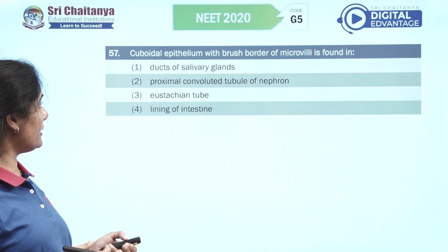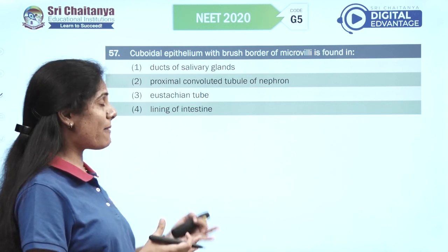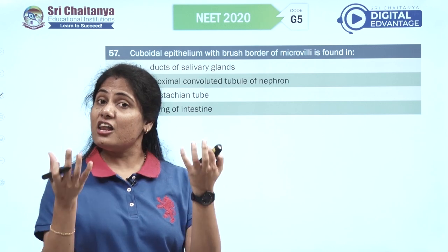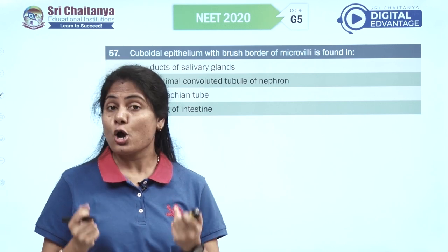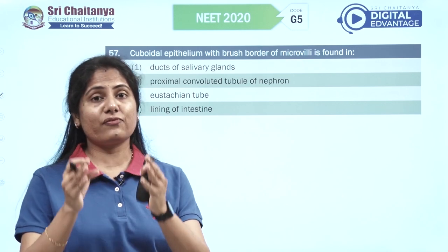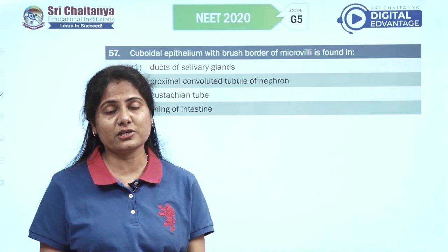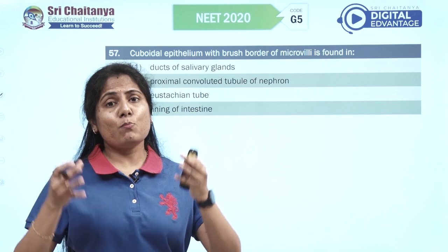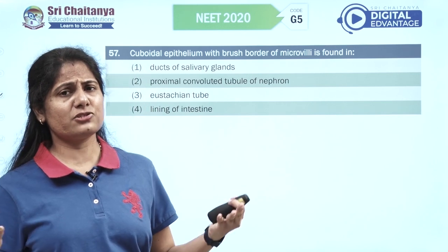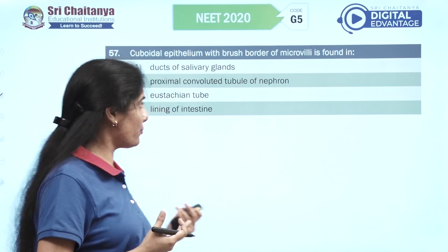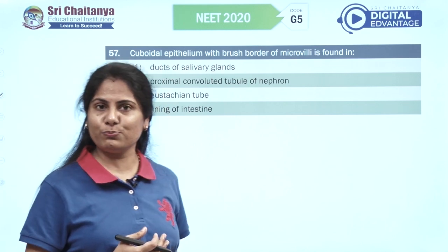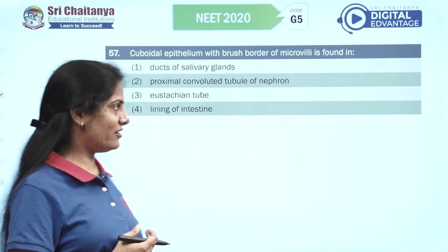Cuboidal epithelium with brush border of microvilli — where do we find brush border? Wherever a lot of absorption is required — obviously the PCT (proximal convoluted tubule). From your excretion chapter, most reabsorption — about 70 to 80% of electrolytes — takes place in the proximal convoluted tubule of the nephron.